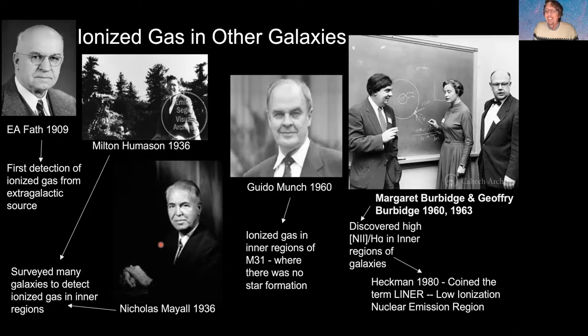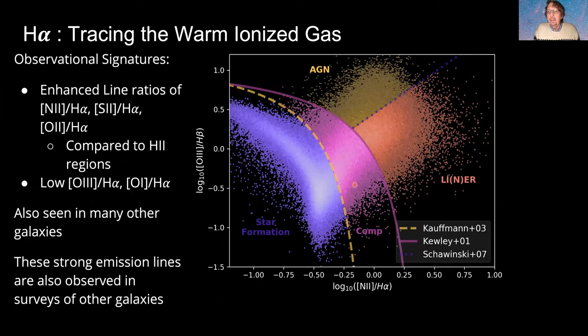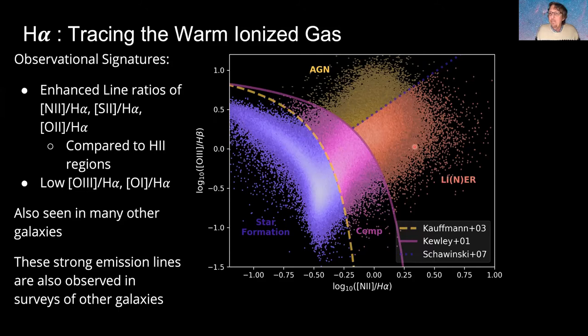In studying other galaxies it became common to classify them by line ratios — the N2/H-alpha ratio versus the O3/H-beta ratio. Galaxies dominated by star formation lie in one zone; galaxies dominated by a central black hole lie in another; and LINERs occupy the right-hand side of this diagram. Every point is the center of a galaxy. We don't know what creates LINER ionization — it doesn't seem to be hot young stars, since there's not much star formation in these galactic centers.